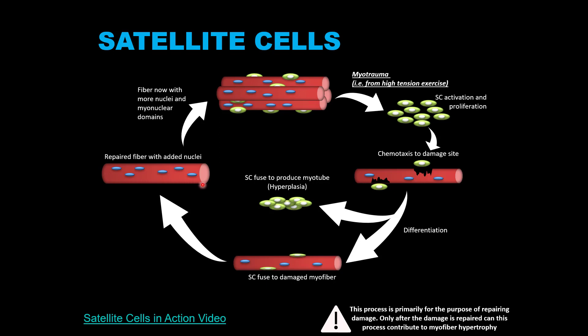On a side note, one factor that might contribute to muscle growth is hyperplasia, which is the formation of new muscle fibers. This is not well-substantiated in humans, but has been studied in animals. One way hyperplasia may work is also through satellite cells: satellite cells can fuse together to form a premature muscle fiber called a myotube, and eventually that myotube can become a mature muscle fiber.